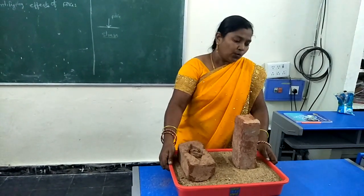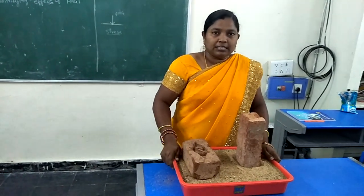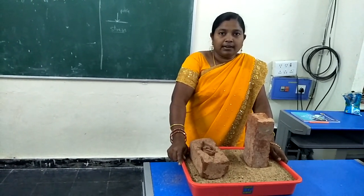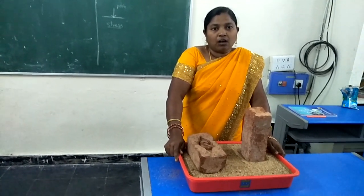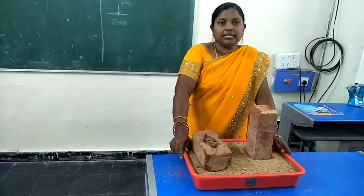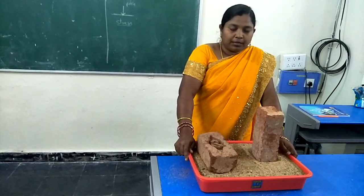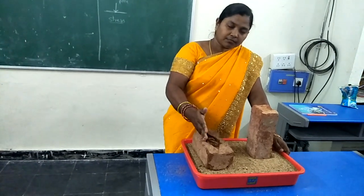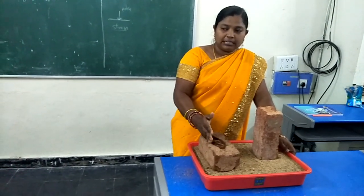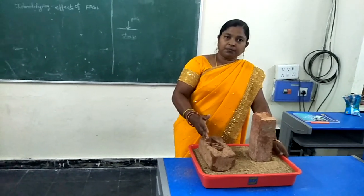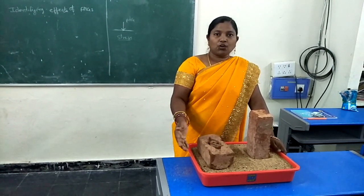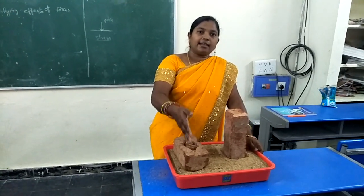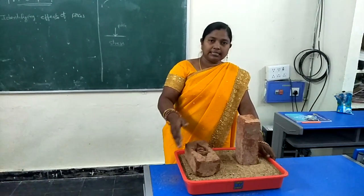We also observe this when cutting vegetables. Our knives have a sharp edge. Why do all knives have a sharp edge? Because when we apply force on the knife, the sharp edge concentrates the total force onto a very small surface area, so it can easily cut the vegetables.